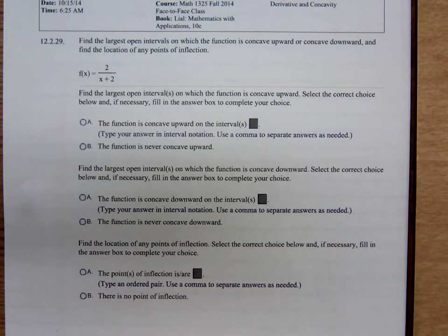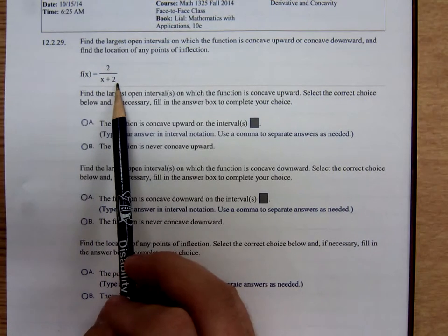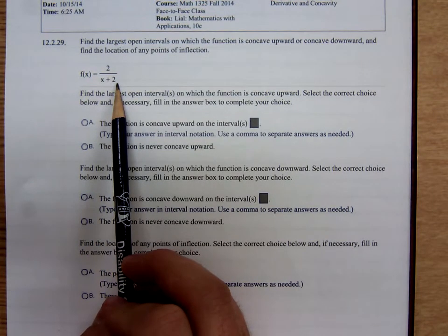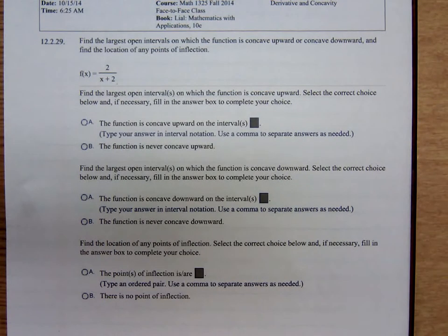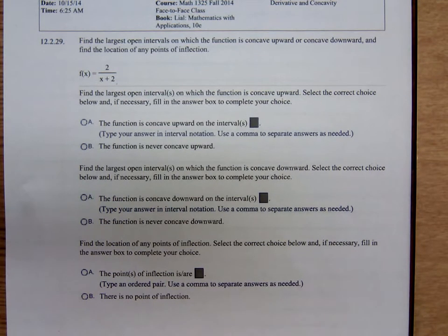So here's the function f(x) equals 2 over x plus 2 and they want us to find the largest open intervals on which the function is concave upward or concave downward and find the location of any points of inflection.